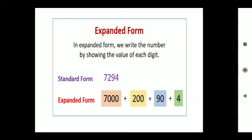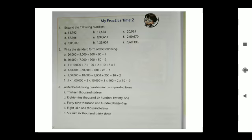This is your second worksheet. In question one, you have to expand all the numbers. In question two, you have to write the standard form, like 20 + 5000 + 20,000 + 5000 + 600 + 90 + 5.